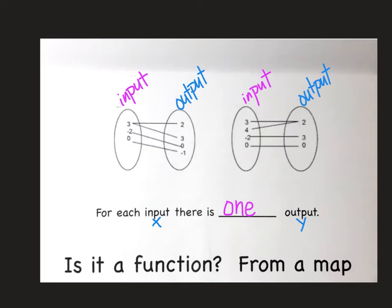As you go down your input, you're going to be checking these numbers. And instead of listing them a bunch of times, what happens is this line is drawn out from it. If it has two lines coming out from it, that means it's getting repeated. So this map would automatically be not a function, because when I look right here, this number three, it has two outputs. Three has two outputs. Therefore, this one would be not a function.